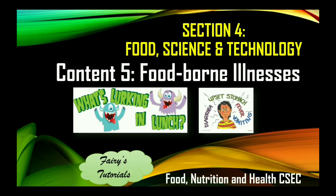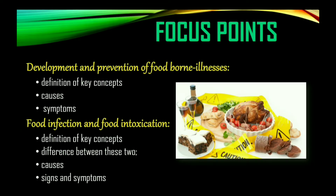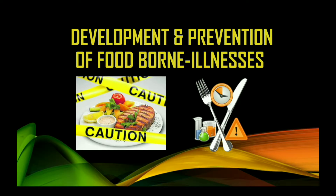Welcome back to Fairs Tutorials. We're still on Section 4, entitled Food Science and Technology. We have looked at the series production of common food commodities, the factors that impact food spoilage and contamination, and perishable and non-perishable foods. In today's session we'll be looking at Content 5, entitled Foodborne Illnesses.